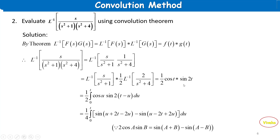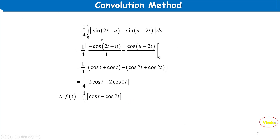So f(t)*g(t) = (1/2) · integral from 0 to t of cos(u)·sin(2(t−u)) du. Using the formula 2cos(A)sin(B) = sin(A+B) − sin(A−B), we get (1/4) integral from 0 to t of [ sin(2t−u) − sin(u−2t) ] du.